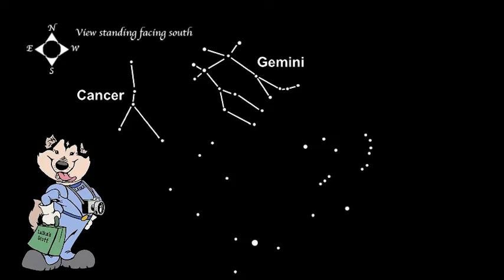A good starting point to find Cancer are the bright stars Castor and Pollux. Castor and Pollux are known as the twins, and are part of the constellation Gemini, which means the twins. Gemini is located northeast of Orion. Cancer is then just east and slightly south of Gemini. Follow the twins Castor and Pollux to the southeast, and you will find Cancer.